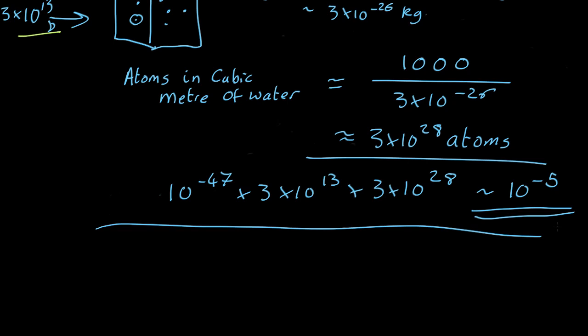Well, let's estimate that. How many people are there on Earth? I don't know, about 10 billion. Let's call it 10 to the 10. It's a very rough calculation.